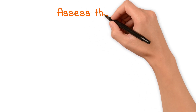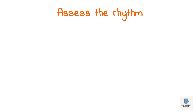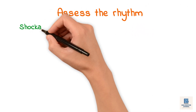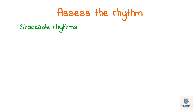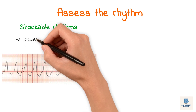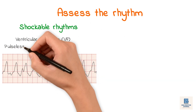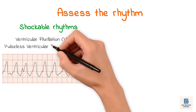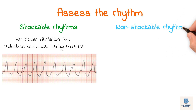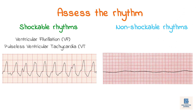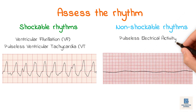Once the monitor is on, you assess the rhythm. There are two options: shockable rhythms — ventricular fibrillation, VF, or pulseless ventricular tachycardia, VT — and non-shockable rhythms — pulseless electrical activity, PEA, or asystole.